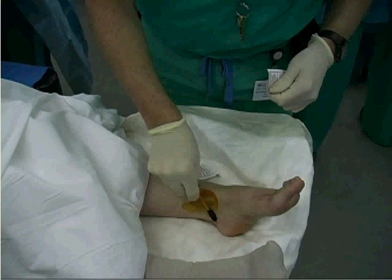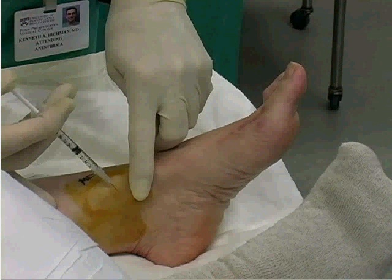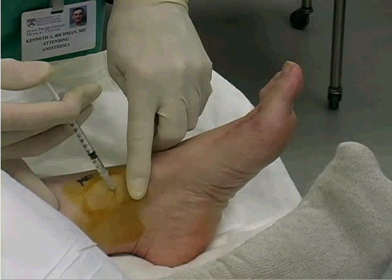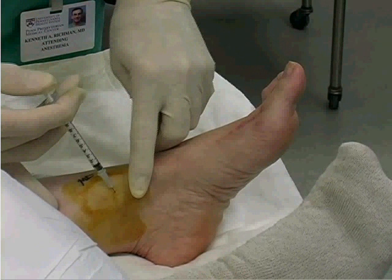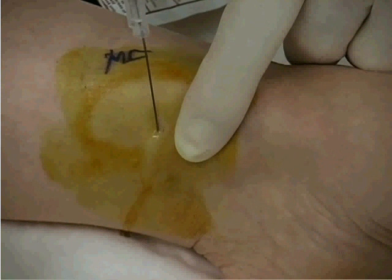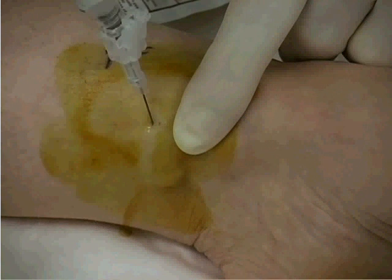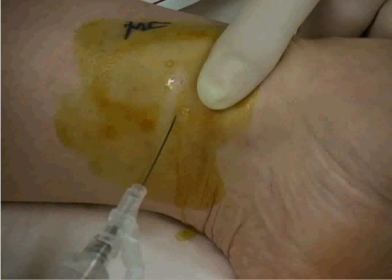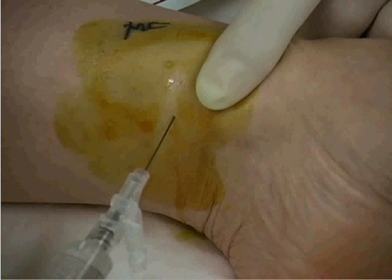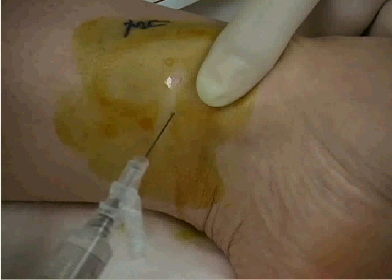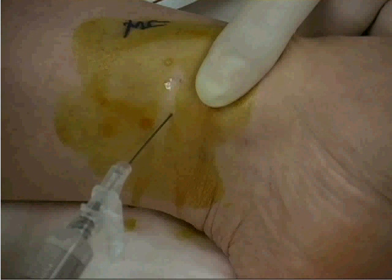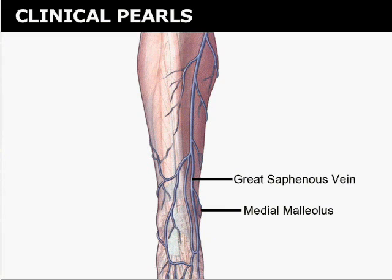Using the 25-gauge needle, create a wheal in the cutaneous tissue over the medial malleolus with 1% lidocaine. Insert the 22-gauge needle through the skin wheal, directing the needle posteriorly toward the Achilles tendon. Inject 3 milliliters of local anesthetic. Reinsert the needle into the raised tissue and inject an additional 3 milliliters of local anesthetic anterior to the malleolus, appreciably raising the cutaneous tissue. The great saphenous vein runs anterior to the medial malleolus, so caution needs to be taken during injection. Aspirate the syringe prior to injection to prevent introducing anesthetic into the intravascular space.